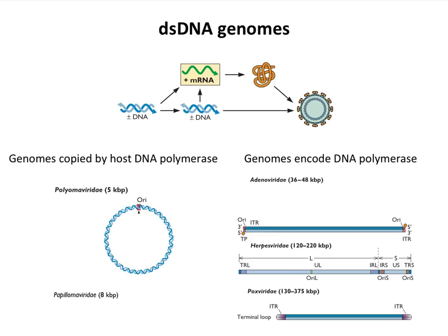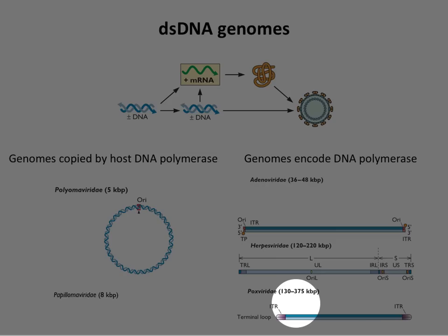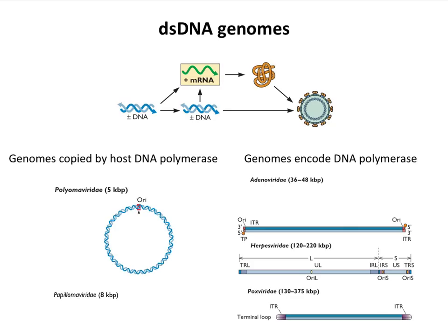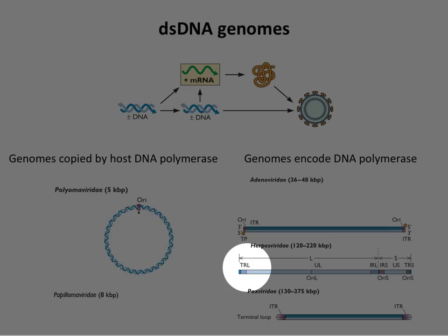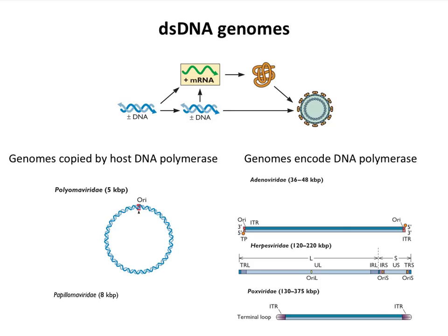The pox virus genomes are between 130 and 375 kilobase pairs. Herpes genomes are simply double-stranded linear molecules with some interesting repeated sequences. The pox virus genome is also double-stranded linear, but the ends are covalently linked — the five- and three-prime ends at each end are covalently joined, so if you denatured this molecule it would make a single-strand circle. These viruses encode their own DNA polymerase and a lot of other enzymes. Pox viruses don't need to go into the nucleus to replicate — they set up replication sites in the cytoplasm.